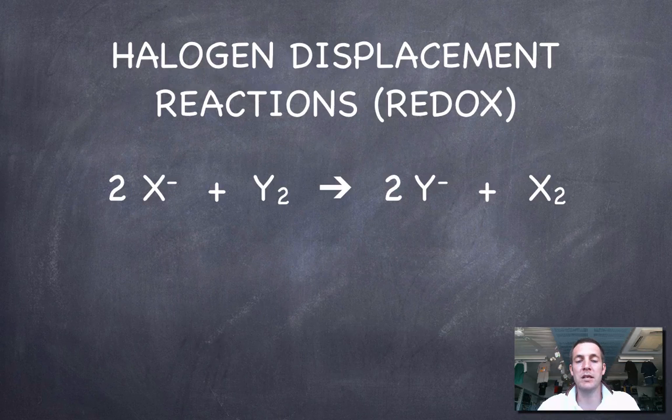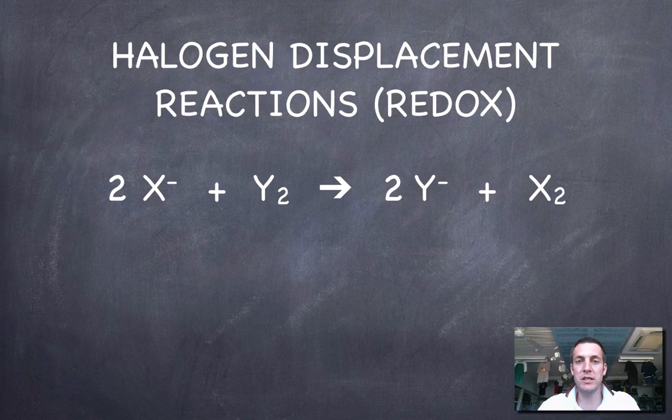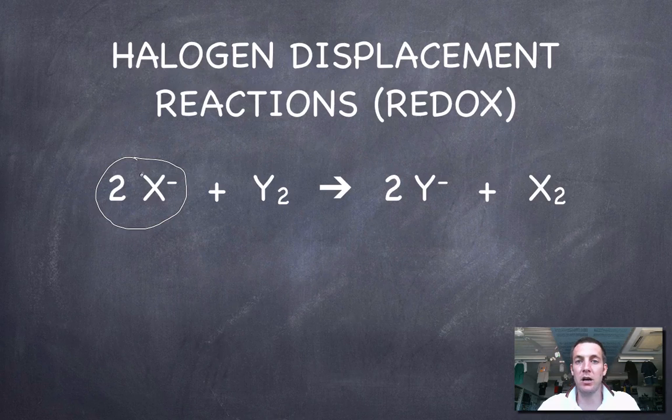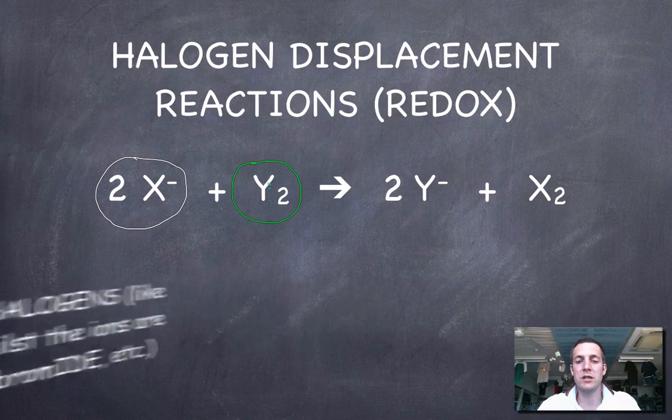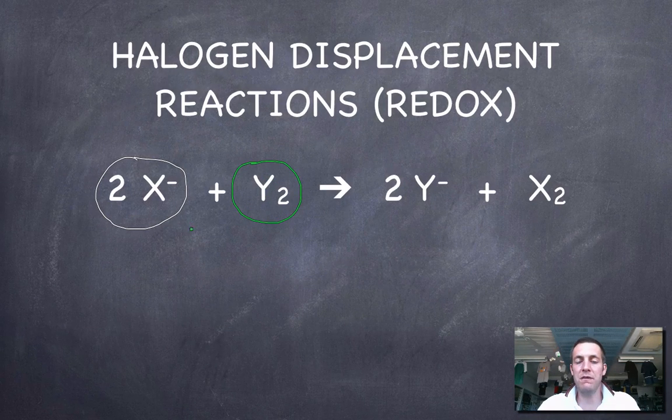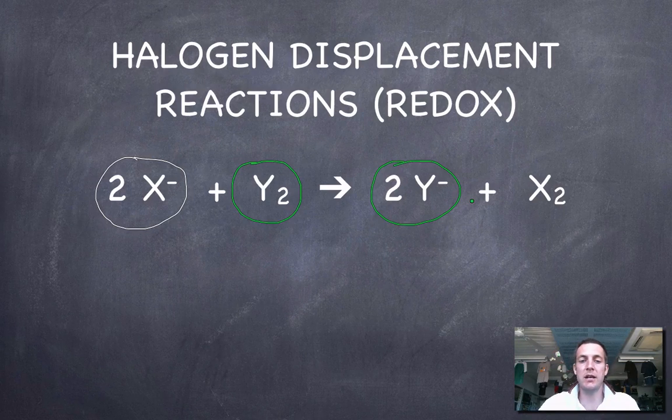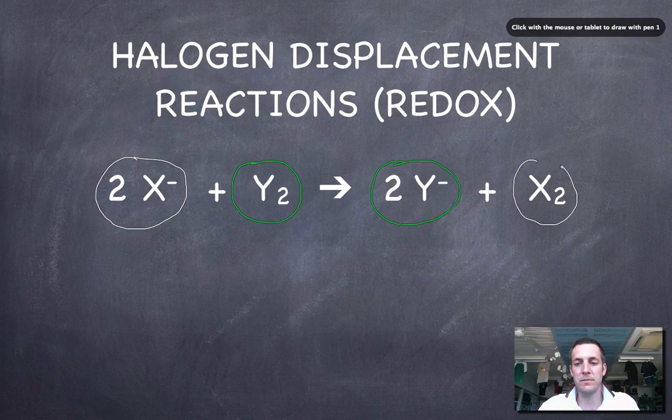What is new to this film is this idea of a displacement reaction. So here's a general equation for a displacement reaction, and what you might be able to see here is that we've got one halogen here as a halide ion, that is to say it's got an extra electron, and it's potentially reacting with another halogen which is an atom at this stage. If the reaction happens, then Y takes these electrons from X, it becomes a Y⁻ ion, in other words a halide ion, and in the process this halide ion turns back into halogen atoms.